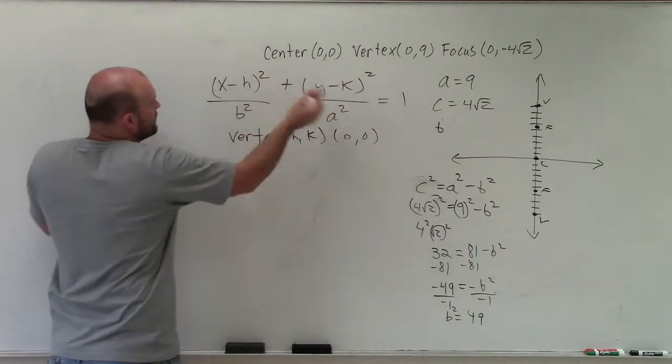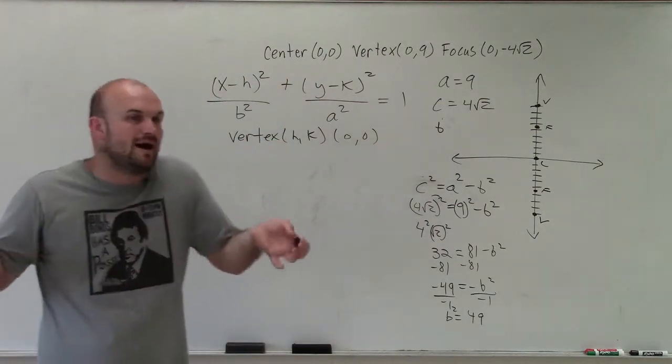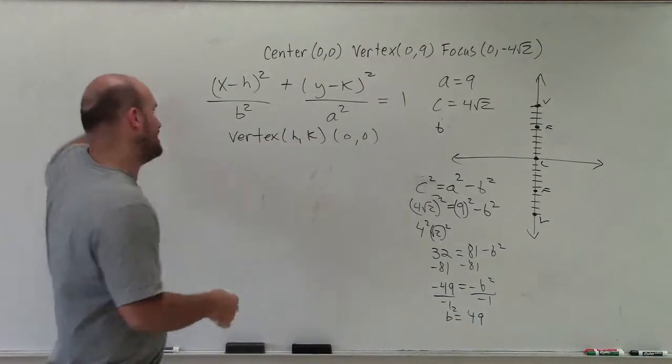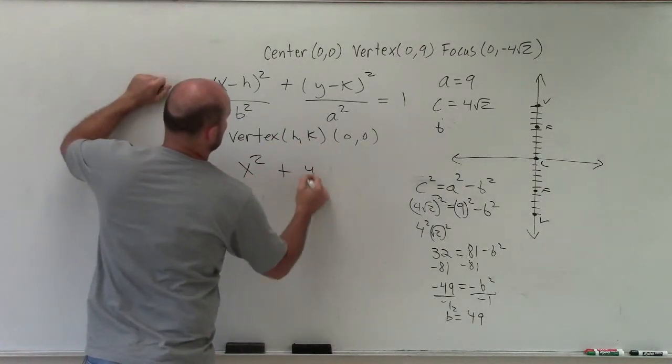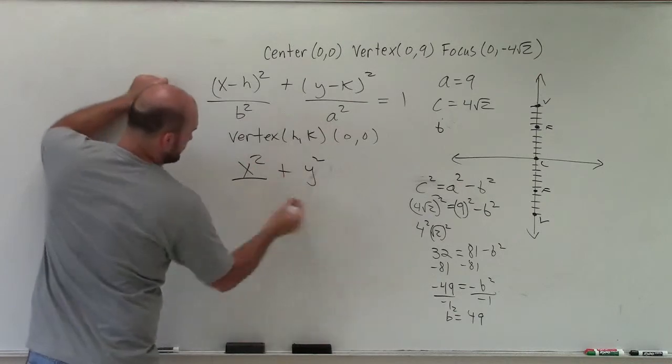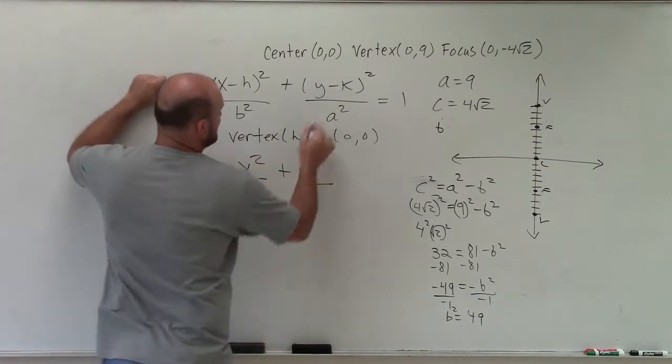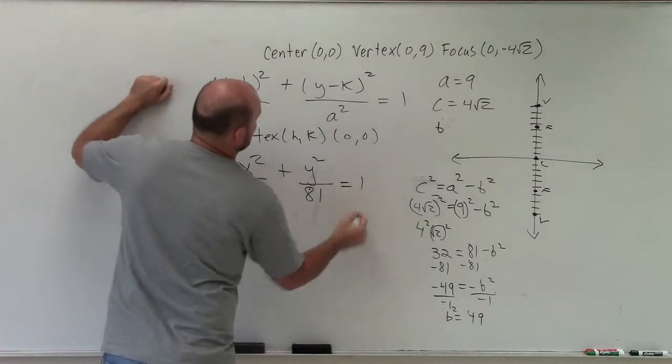So therefore, I can just plug in 0 for h and k, which x minus 0 or y minus 0 is just going to be x and y. So therefore, my final equation is x²/49 plus y²/81 equals 1.